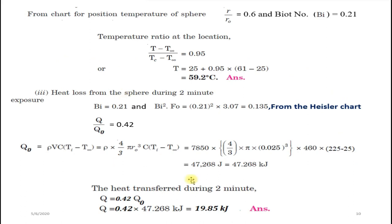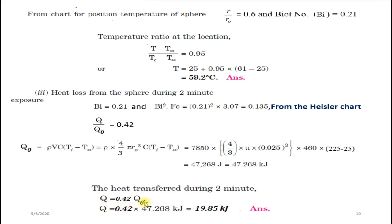With q/q₀ = 0.42, we calculate q₀ = ρ × (4/3)πR³ × Cp × (Ti − T∞). Substituting all values gives q₀ = 47.268 kJ. Therefore q = 0.42 × q₀ = 19.85 kJ. That is the heat transferred from the sphere during 2 minutes.